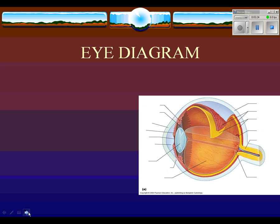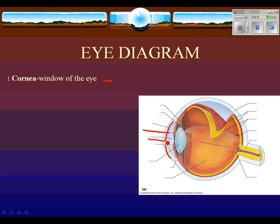Now I want to go over the parts of the eye and how they help you to see. You should have an eye diagram for this. Part number one is the cornea. The cornea is kind of the window into the eye — it's clear, made of a couple of layers of crystalline cells that allow light to come into the eye.